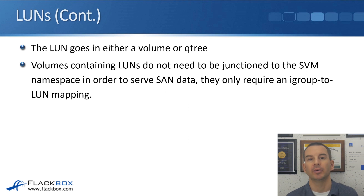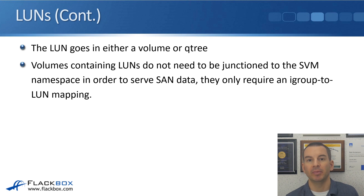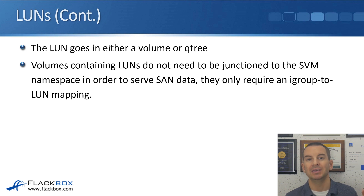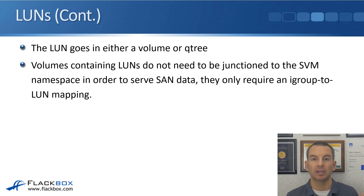With NAS protocols, whenever we're configuring NAS, the volume has to be mounted into the namespace of the SVM. If we've got a volume — volume 1 — and then we mount volume 2 underneath there, then if a client maps a drive to volume 1, they will see volume 2 as a directory inside volume 1. And if we have any qtrees in the namespace, they will show up as directories inside the volumes as well. With NAS protocols, the namespace is basically the directory structure, built by creating the junctions for the volumes and qtrees, and the clients will see and browse that directory structure.